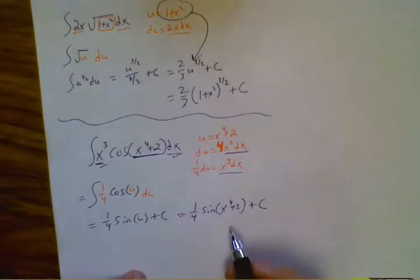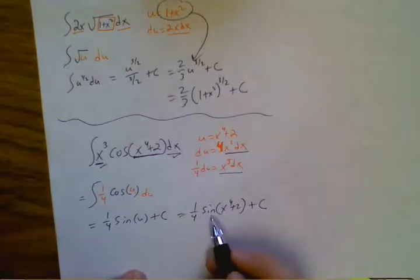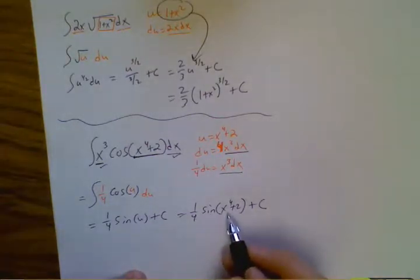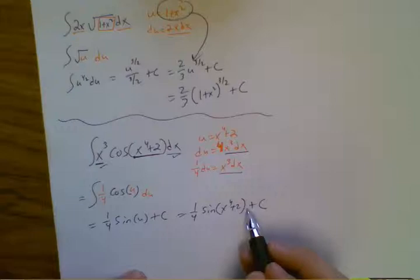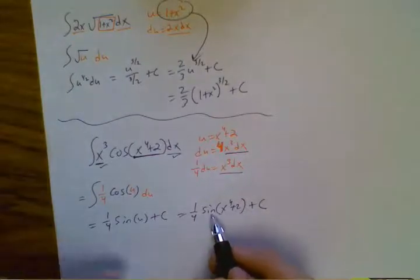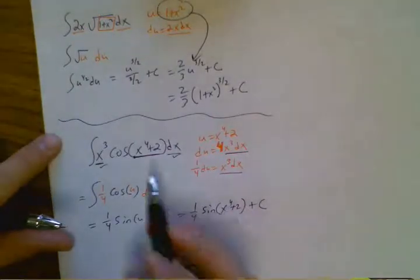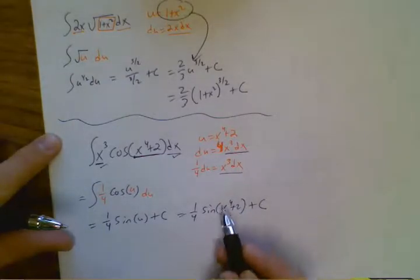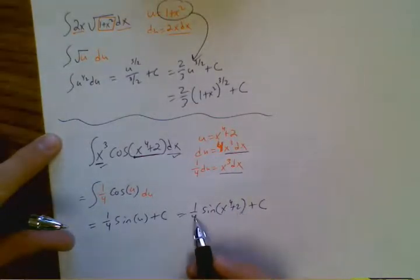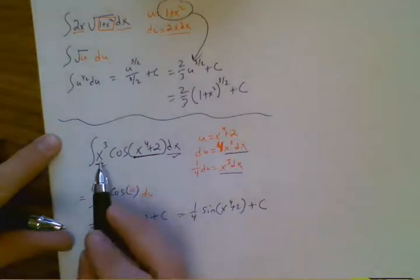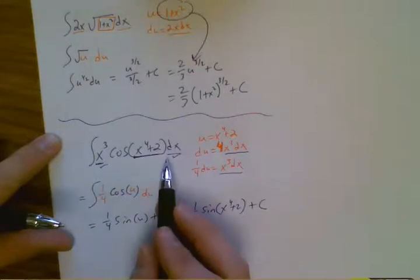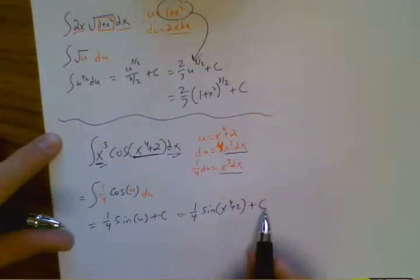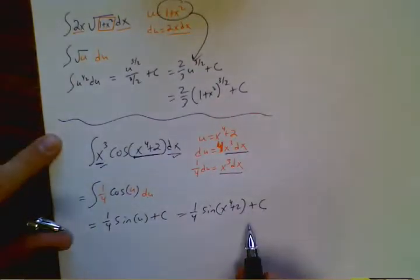Okay, again, if you're not sure, take the derivative. 1 4th cosine, keep the inside alone, times the derivative of what's inside. So 1 4th cosine of x to the 4th plus 2. So here's cosine x to the 4th plus 2. Derivative of what's inside is 4x cubed. The 4 cancels out with the 1 4th, and all you're left with is an x cubed, which is right here. That's how you know you did it right. And obviously the derivative of just a constant would be 0. So that's always a good way to check.